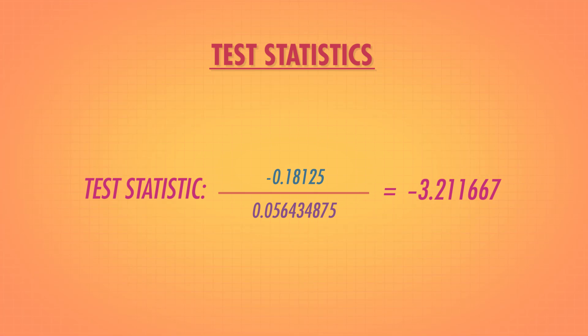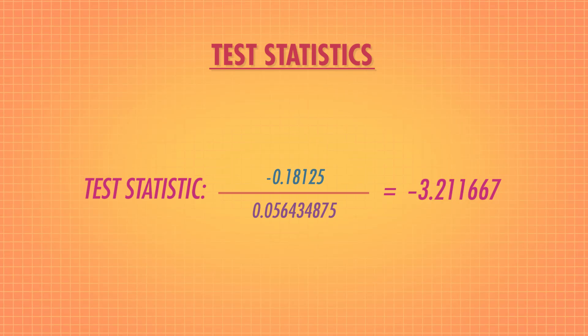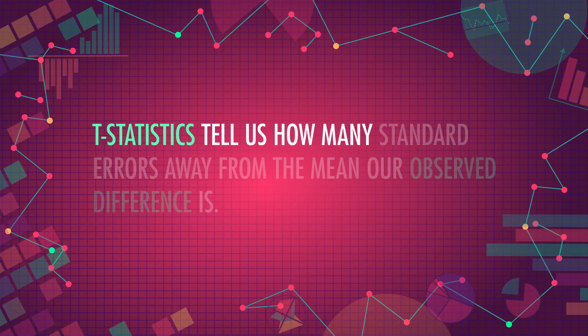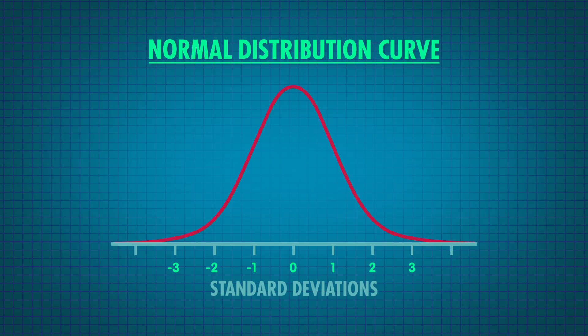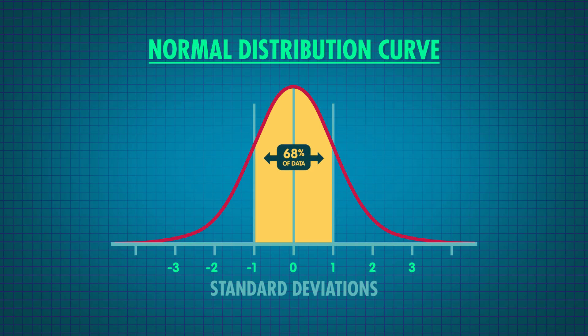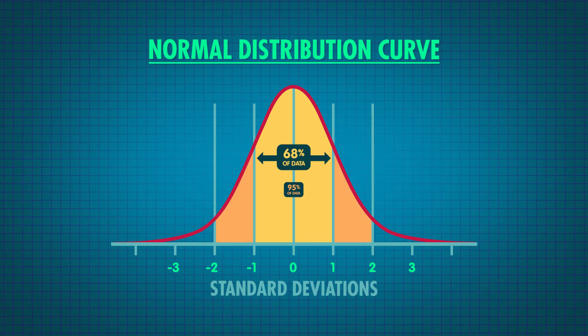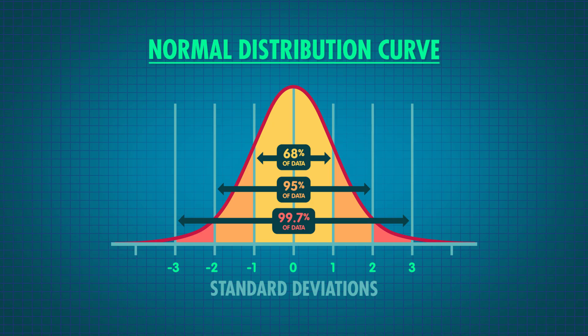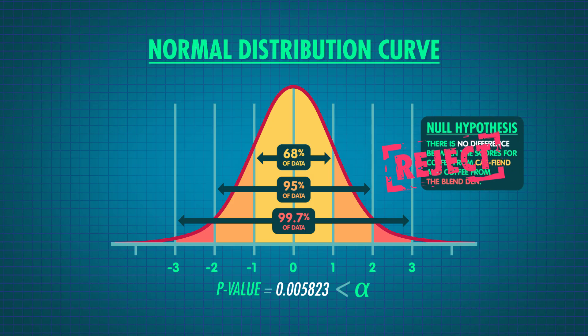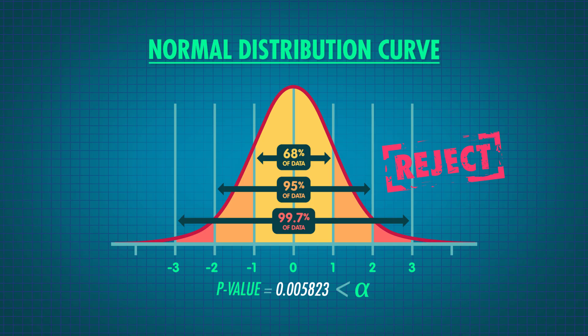Before we get to the corresponding p-value, let's consider another way to think about what t-statistics are actually telling us. T-statistics tell us how many standard errors away from the mean our observed difference is. Though the t-distribution isn't exactly normal, it's reasonably close, so we can use our intuition about normal distributions. Normal distributions have about 68% of their data within 1 standard deviation from the mean and about 95% within 2 standard deviations. That means t-scores around 3, like ours, are about 3 standard errors away from the mean — only around 0.3% of scores are that far away. So it makes sense that our p-value is very small: 0.00582. This allows us to reject the null hypothesis, meaning there is a difference between the scores for Caffeined and The Blend In. From now on, I'll be buying my coffee from The Blend In.